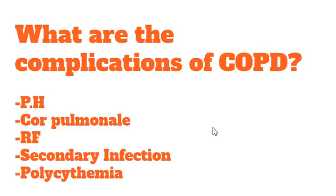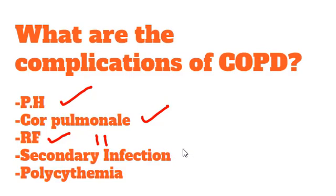What are the complications of COPD? The complications of COPD are pulmonary hypertension, cor pulmonale, and respiratory failure — in this case type 2 respiratory failure occurs. In type 2 respiratory failure, the patient will have both hypoxia and hypercapnia. But in case of bronchial asthma, there is type 1 respiratory failure, meaning the patient will have only hypoxia. Secondary infection may also occur and the patient may have polycythemia.